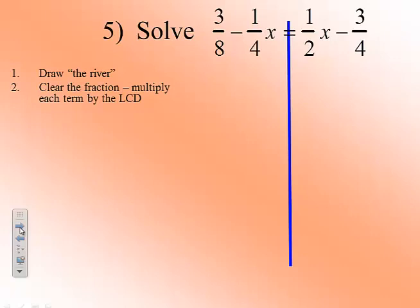So we have in the denominators an 8, a 4, a 2, and a 4. So we can multiply every single term by 8 over 1 or multiply every single term by 8 and cancel out those denominators. And when we do that, we end up with 3 minus 2x equals 4x minus 6.